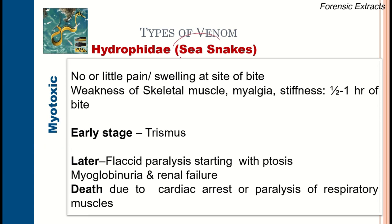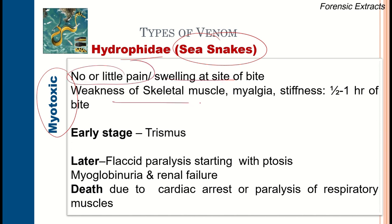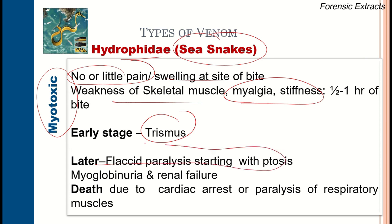Sea snakes (Hydrophiidae) are myotoxic. There is little local sign initially; local pain and swelling may be present. Weakness of skeletal muscles, myalgia, and stiffness are seen, along with trismus (lockjaw) and flaccid paralysis leading to ptosis. Myoglobinuria and renal failure may occur, and death is due to cardiac arrest or paralysis of respiratory muscles.